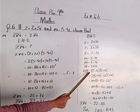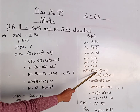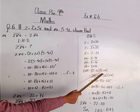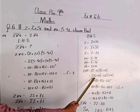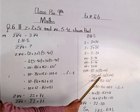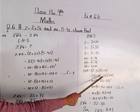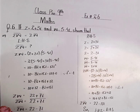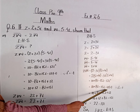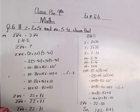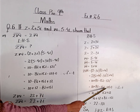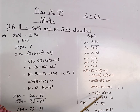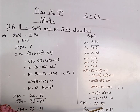Conjugate of w is 5 plus 4 iota, because w is equal to 5 minus 4 iota. Now find the product of conjugate of z and conjugate of w: 2 minus 3 iota multiplied by 5 plus 4 iota. We get 2 times 5 is 10, plus 8 iota, minus 15 iota, minus 12 iota squared. Since iota squared equals minus 1, that becomes 10 plus 8 iota minus 15 iota plus 12. Separating parts: 10 plus 12 is 22, and 8 iota minus 15 iota is minus 7 iota.